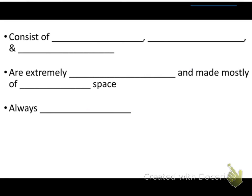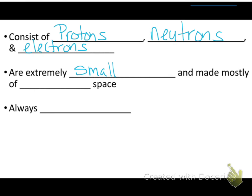Atoms are made up of, or consist of, protons, neutrons, and electrons. All atoms are extremely small and made mostly of empty space. And we also know that atoms are always moving.